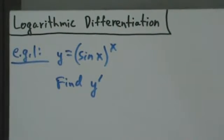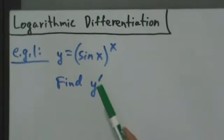Okay, so here's example one with logarithmic differentiation. We have y equals sine of x all raised to the x, and we want to find y prime. The first step is always the same - as long as y is already by itself, we just take the natural log of both sides.